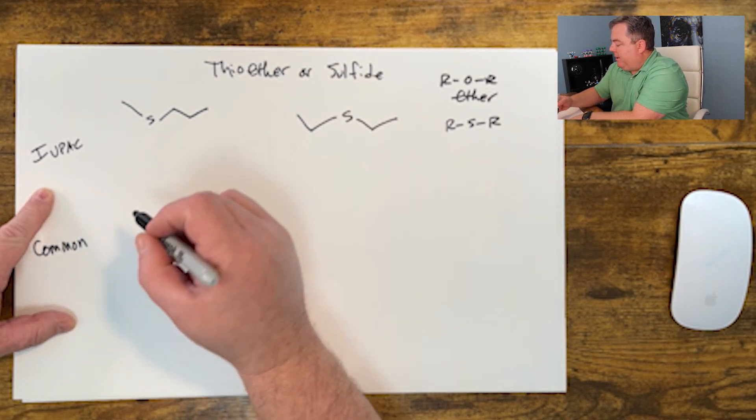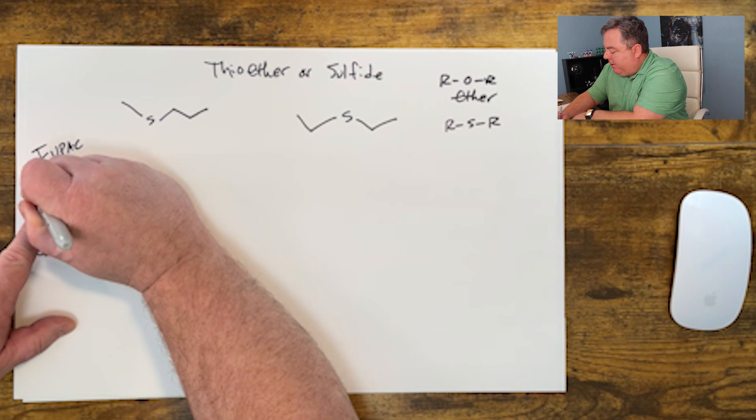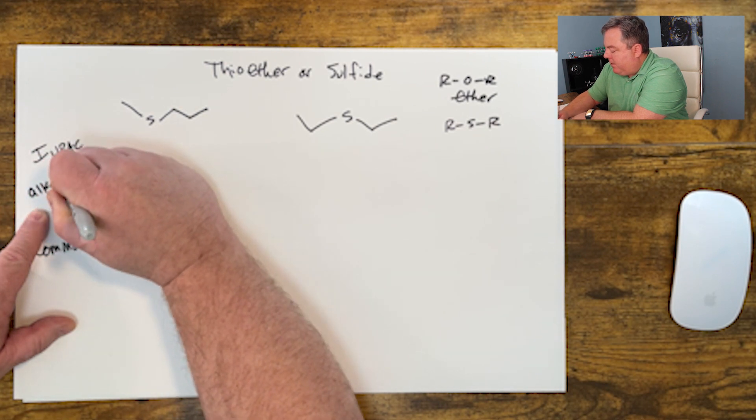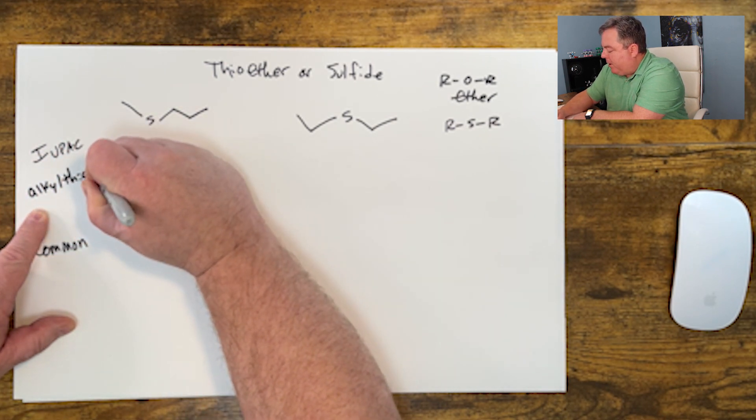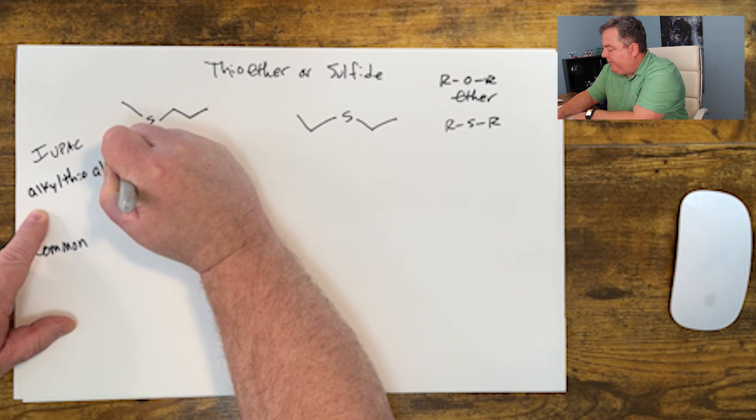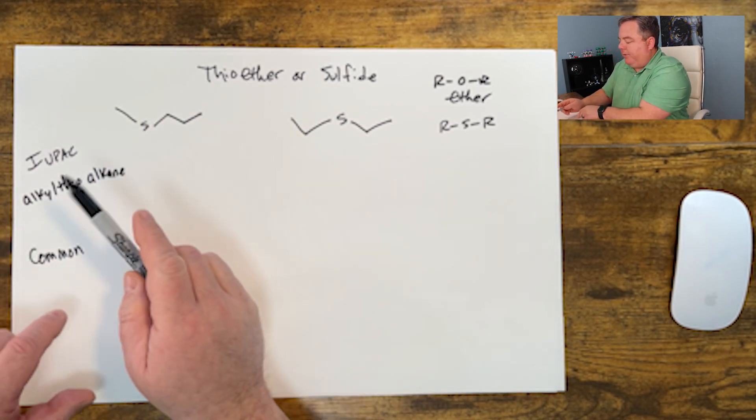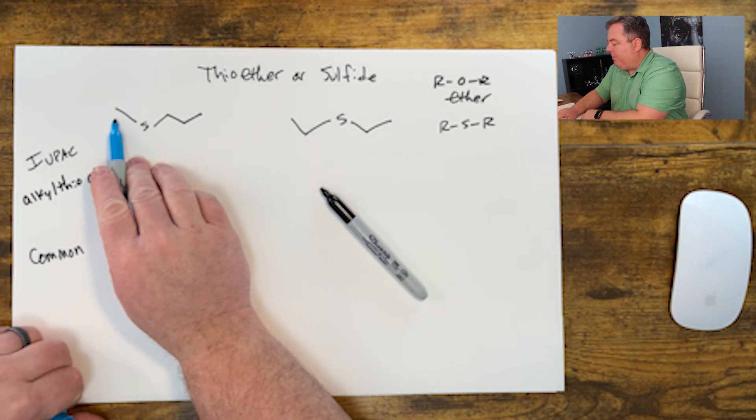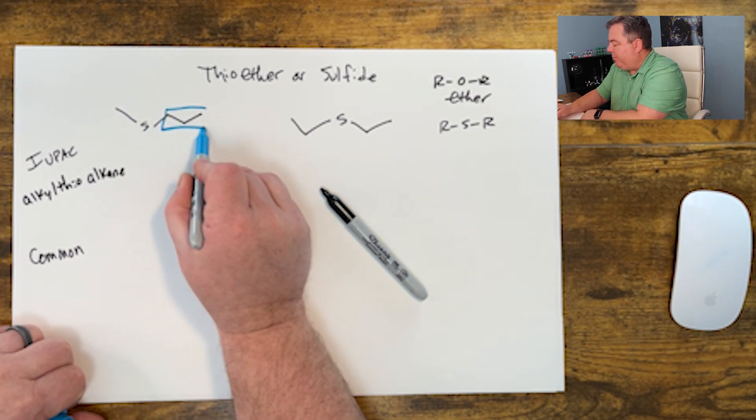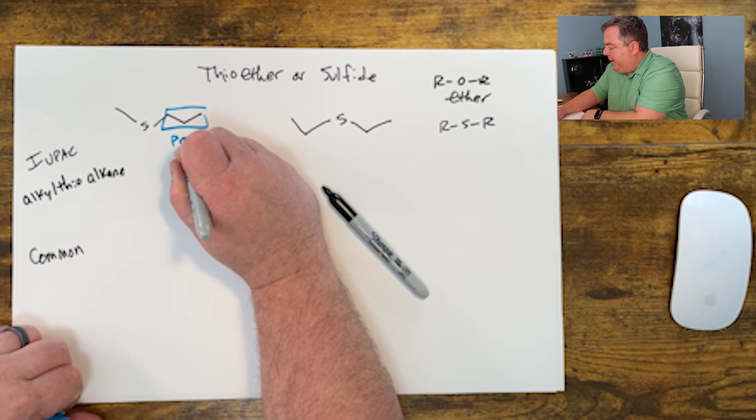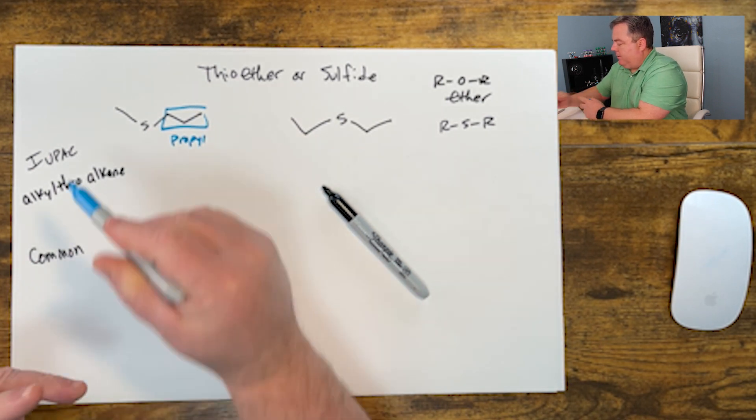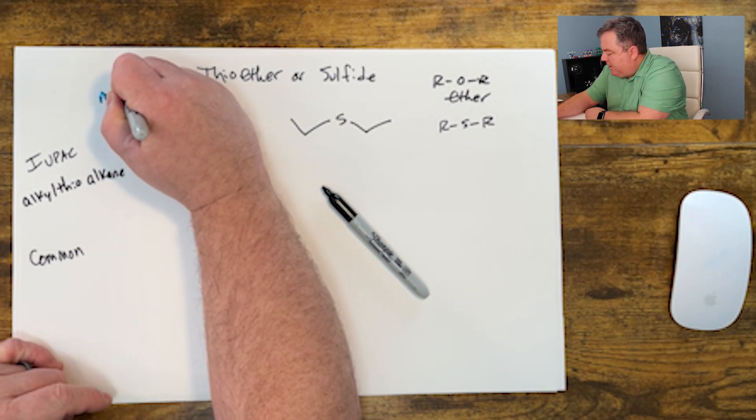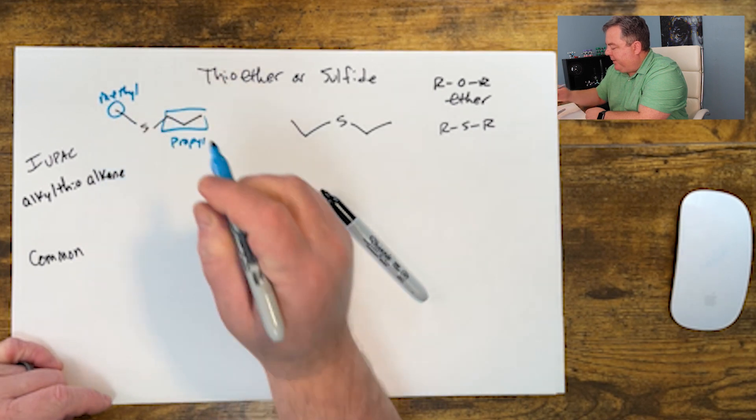So the IUPAC name: you want to have an alkylthio group on an alkane base ending. What we do is we find the longest carbon chain. We have a one carbon methyl and a three carbon propyl, so that'll be our base. A methyl here names that part, so we'll name the propyl as propane.